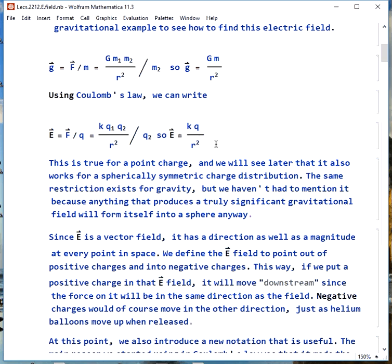This is the form of the electric field for a point charge, kq over r squared, and we'll see that you actually get this when you're outside of any spherically symmetric charge distribution. We get the same thing for gravity, but we don't have to worry about it for gravity because anything that has a significant gravitational field will form itself into a sphere anyway.